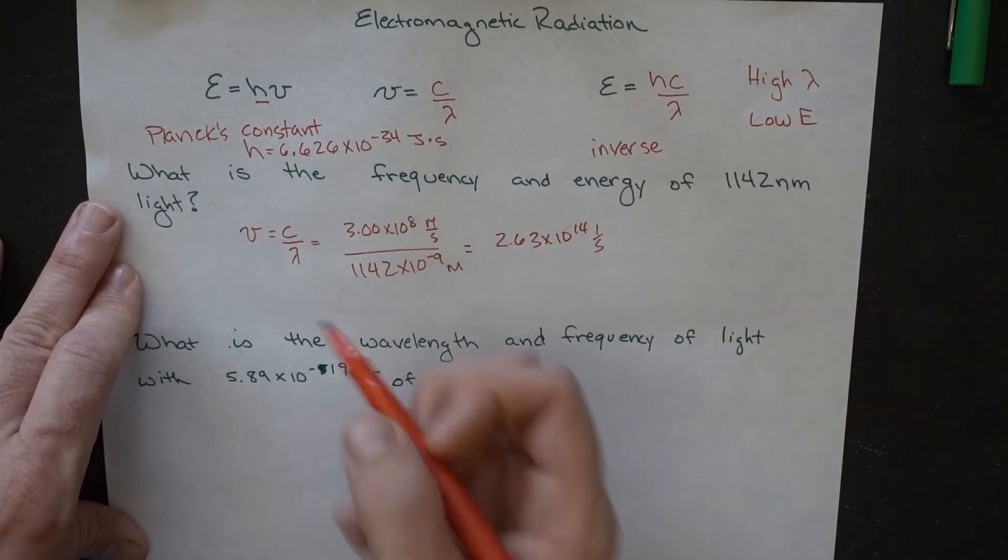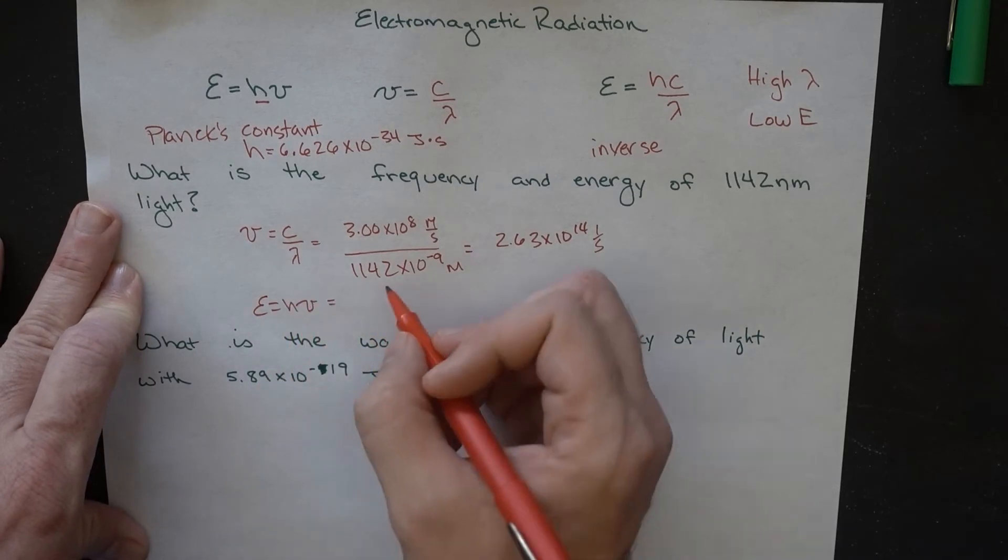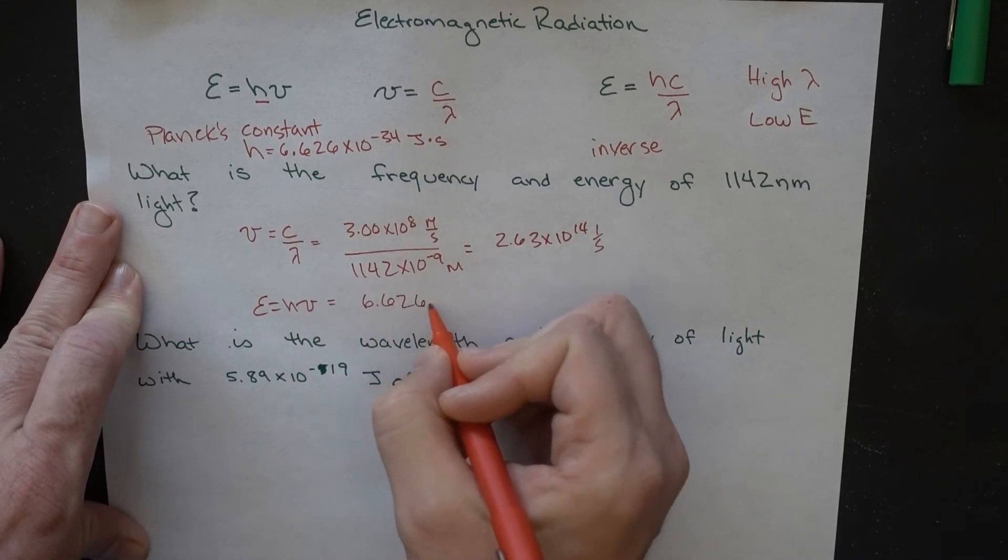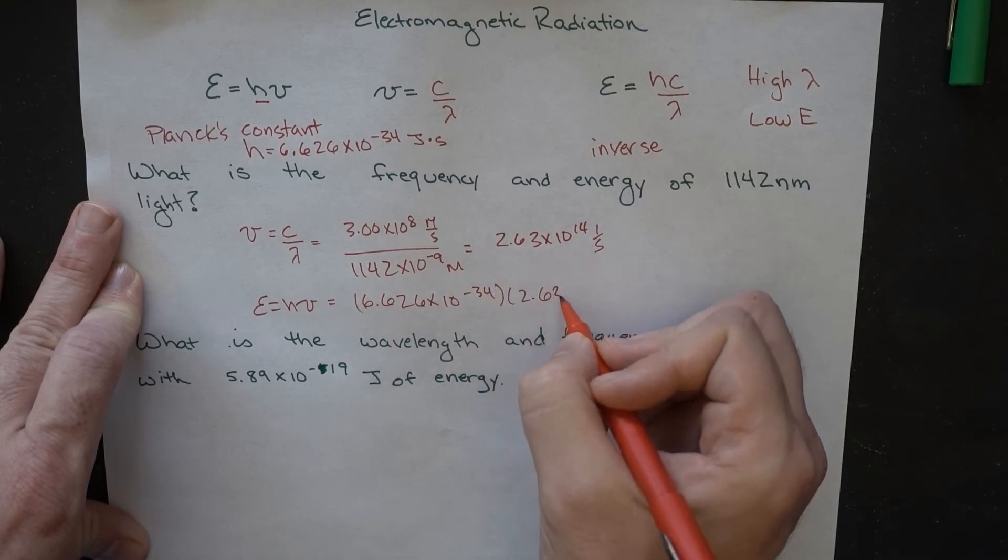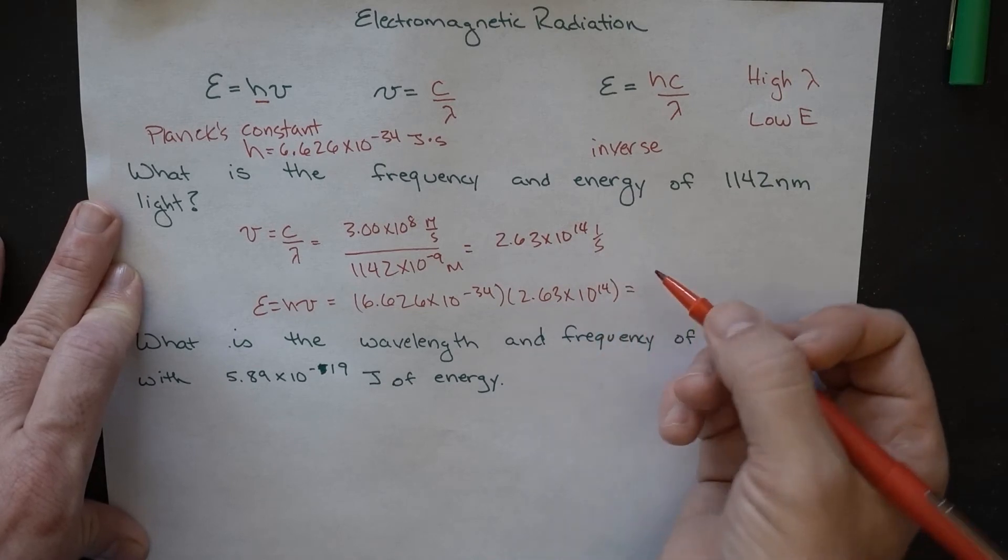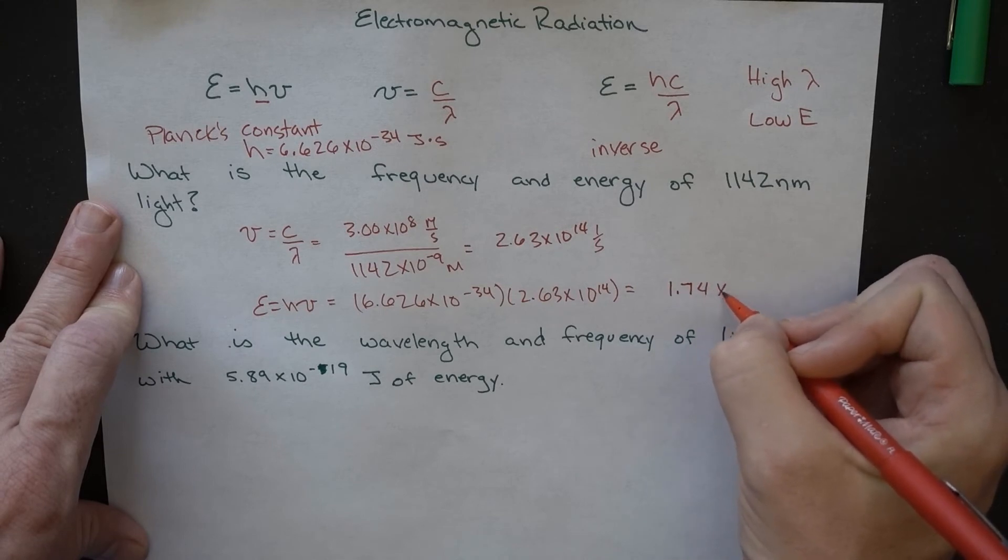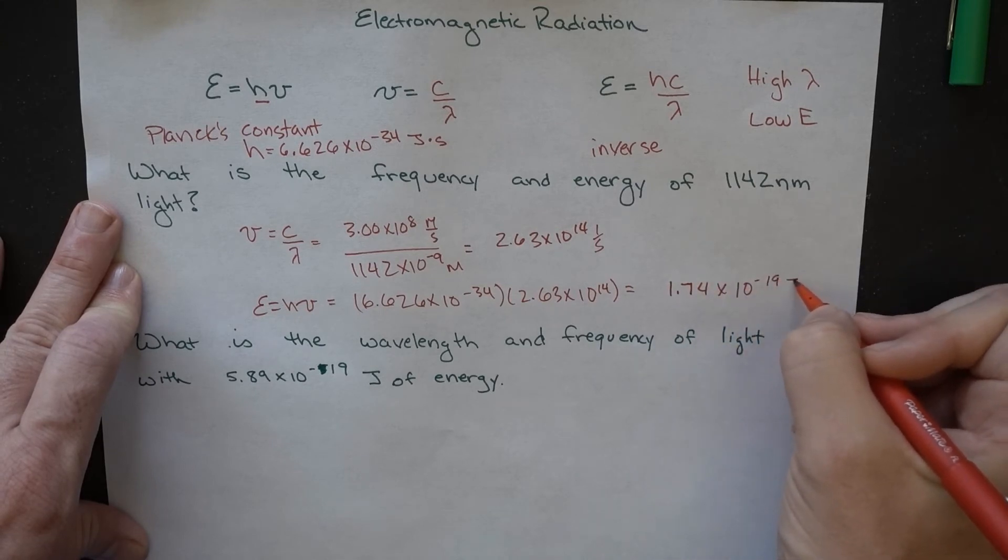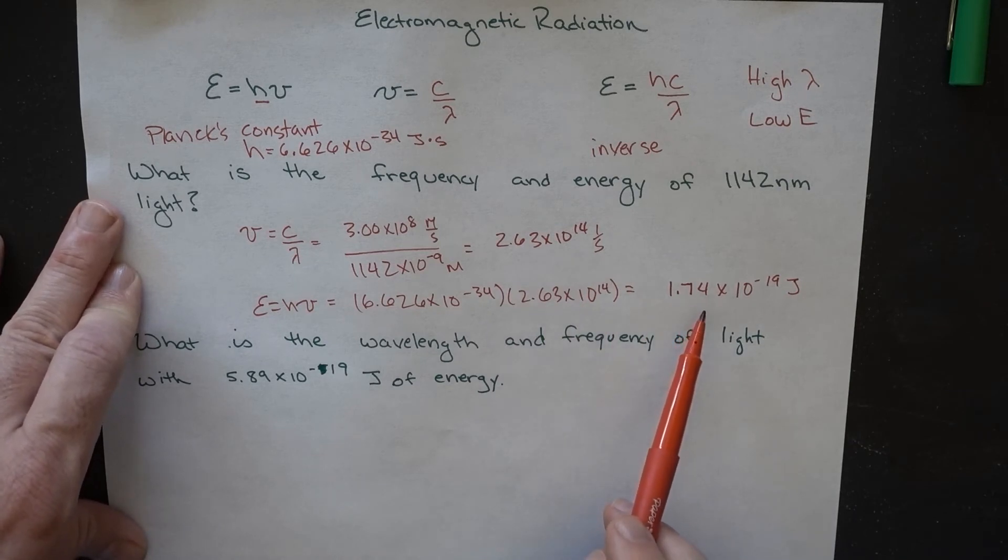Then we can take that number and plug it into E equals H times nu. So, 6.626 times 10 to the minus 34 times 2.63 times 10 to the 14th. And when we put those into the calculator, we end up getting 1.74 times 10 to the minus 19 joules. We've calculated a frequency and we've calculated an energy to go along with that.